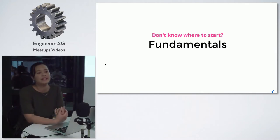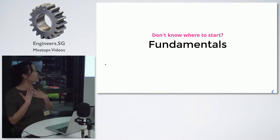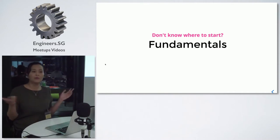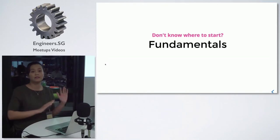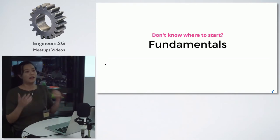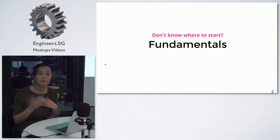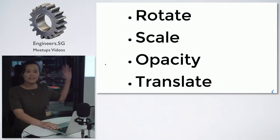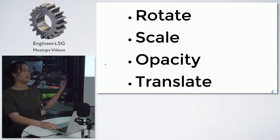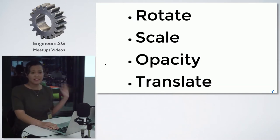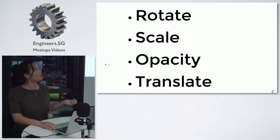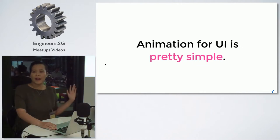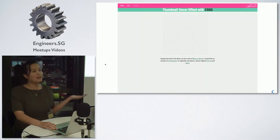So when you start with something that is really new, one of the things that scares you the most is you don't really know where to start. The only advice I have for you is: look at the fundamentals of animation. My specialty is UI engineering, so I animate UI stuff. As you can see, there are some basic animation properties you can look into: rotate, scale, opacity, and translate. This is something CSS engineers will be familiar with on a daily basis.